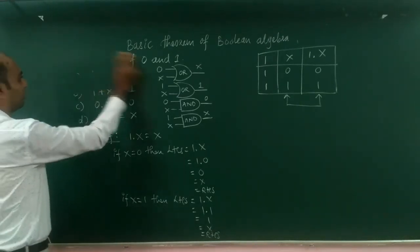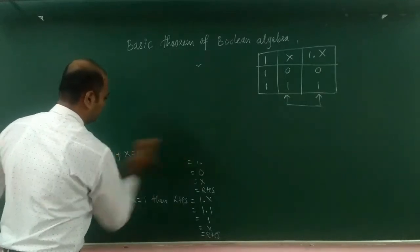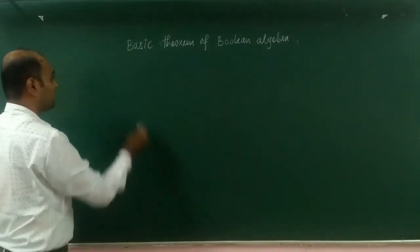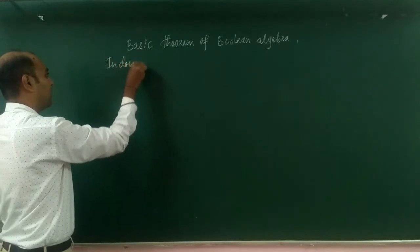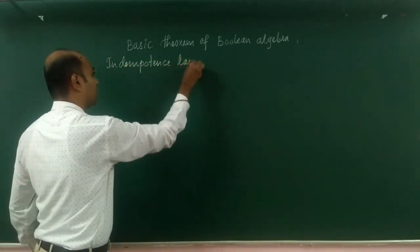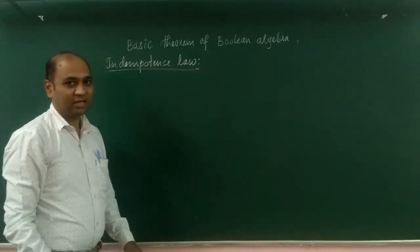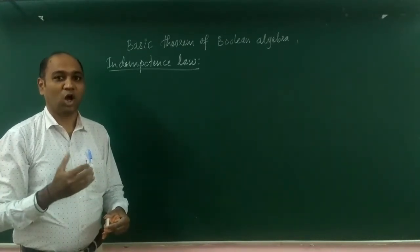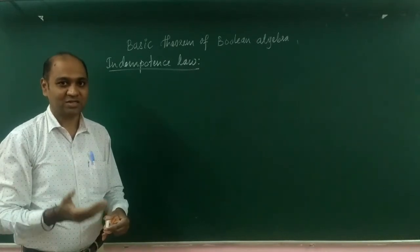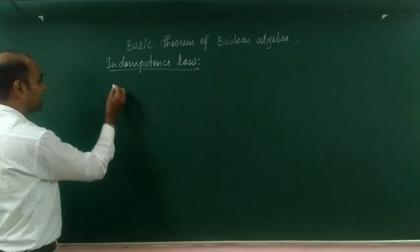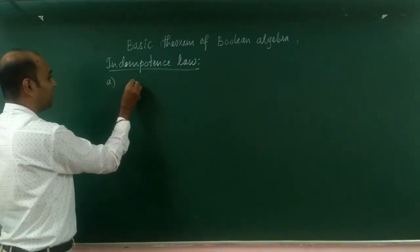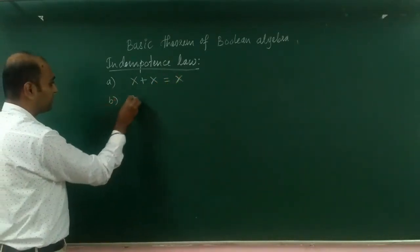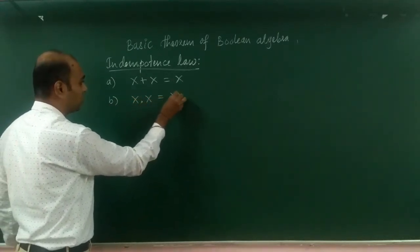Next we will move on to the Idempotent Law. This law states that when we combine a variable with itself using the AND or OR operator, it results in the same variable. So: A — X OR X gives X, and B — X AND X equals X.